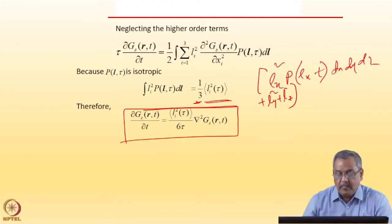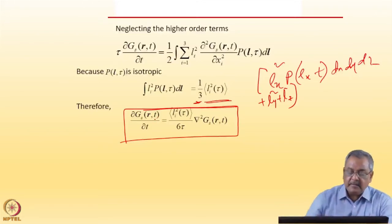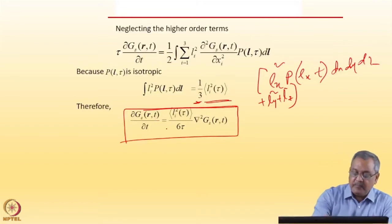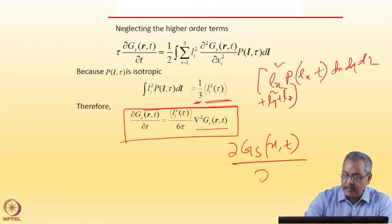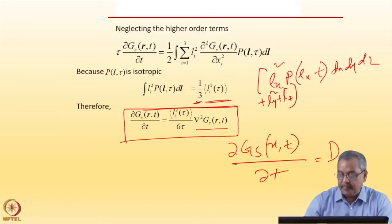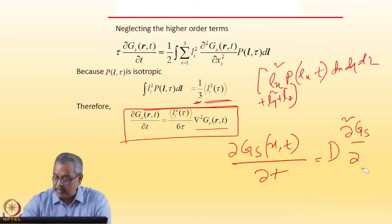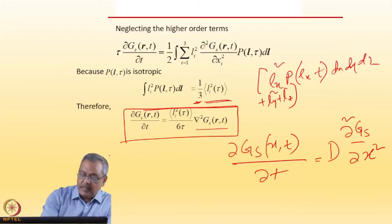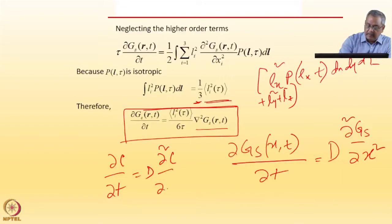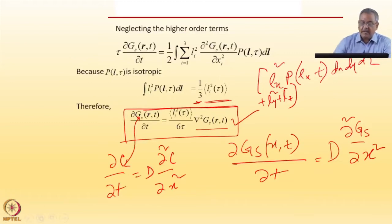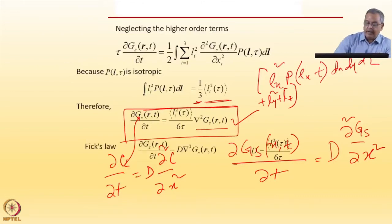After neglecting higher-order terms we get the equation of motion dictated by the self-correlation function. Written in one dimension, you realize this is dGs/dt equal to D·d²Gs/dx², which is exactly Fick's second law: dC/dt = D·d²C/dx² for one-dimensional diffusion. So C and Gs are identical, and I can use the solution of Fick's diffusion equation for Gs(r, t).